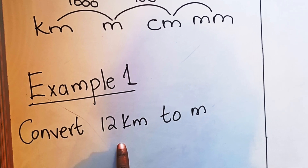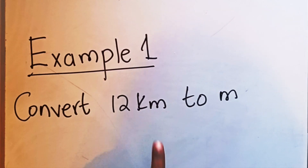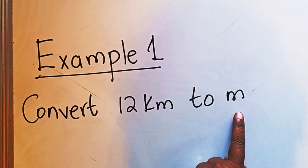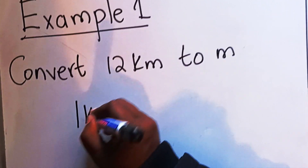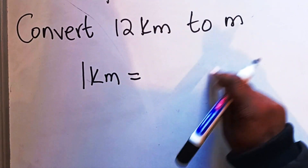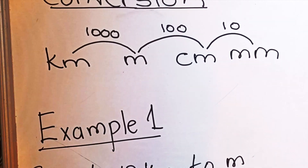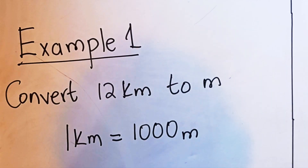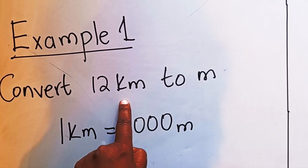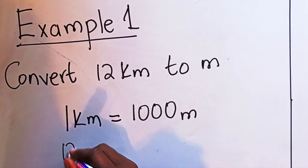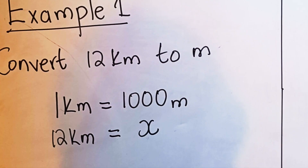For our first example, convert 12 kilometers to meters. When you get this kind of question, first ask yourself: which unit is bigger — kilometers or meters? Kilometers are bigger than meters. So you write: one kilometer equals how many meters? Go to your chart — one kilometer equals 1000 meters. Then write 1000 meters. Next, you're given 12 kilometers, so write 12 kilometers under kilometers.